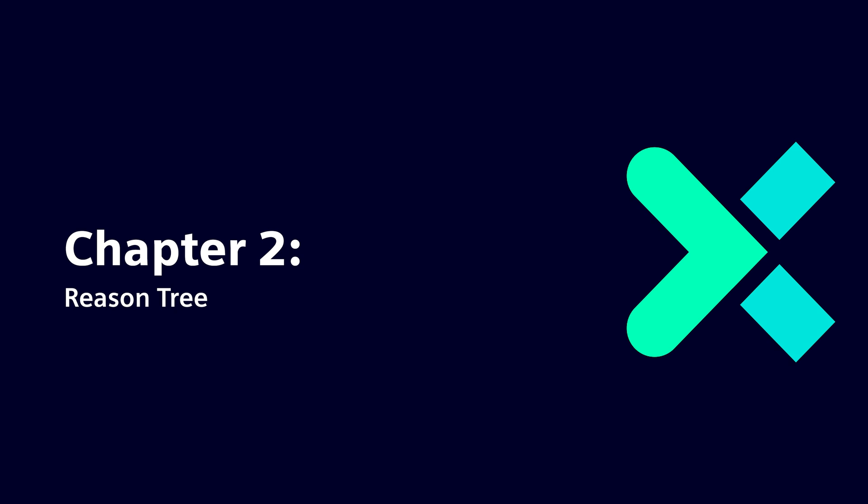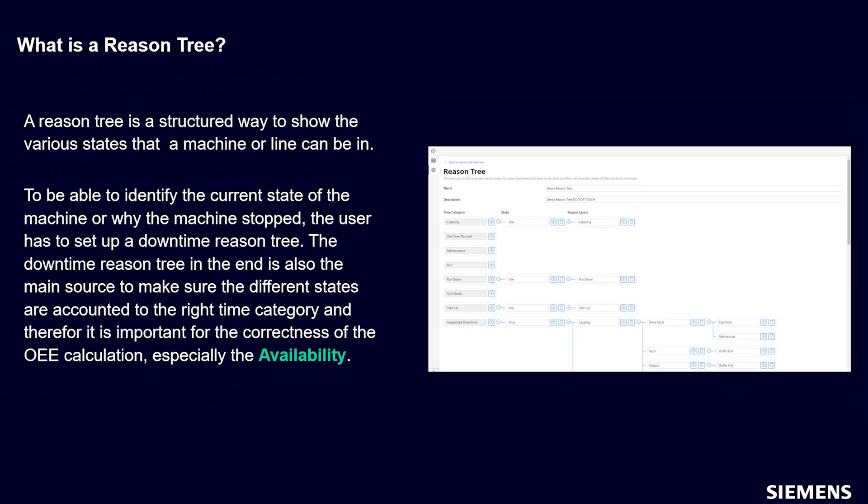After the time model, we need to create a reason tree based on it. Every reason tree set up in the application is derived from the underlying time model. Every change in the time model — especially adding new time categories — will also show up in the reason trees. A reason tree is a structured way to show the various states a machine or line can be in. OEE is a continuous improvement tool, and one crucial step towards improvement is the analysis of downtime reasons of machines and lines.